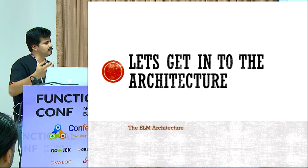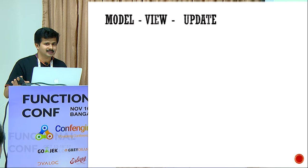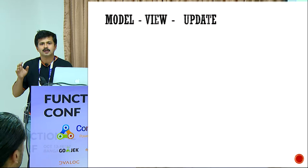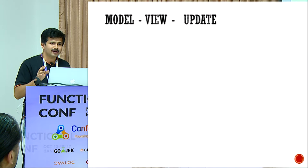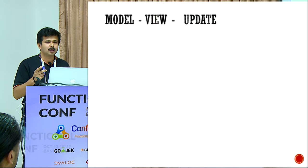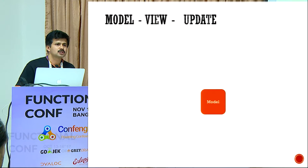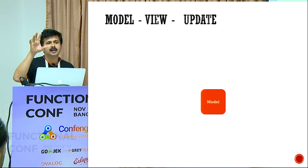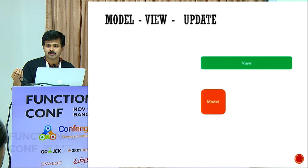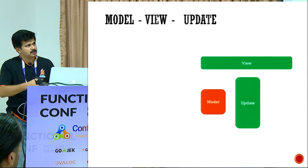This is the core of the session. It's about Model, View — no Controller — it's Update. The view is a function, update is a function, and model is a record or struct. The model encapsulates all the data that your application or web page needs. The view is the representation of that data — how do you represent it? And there is an update function. The green ones are the functions.